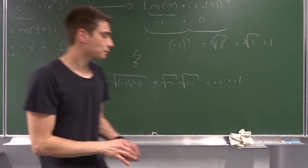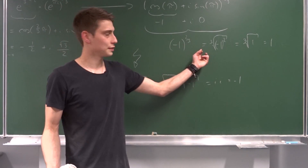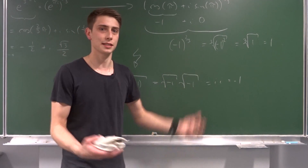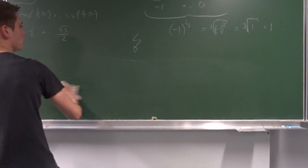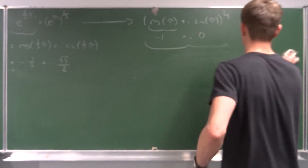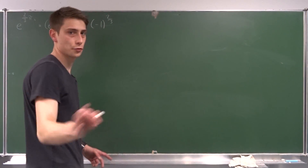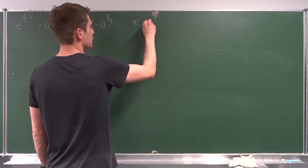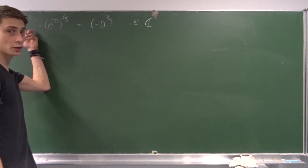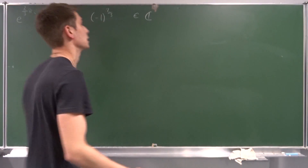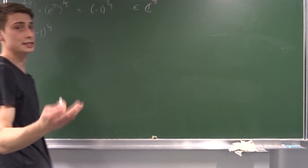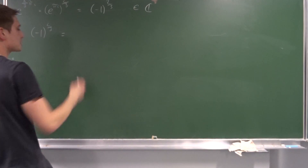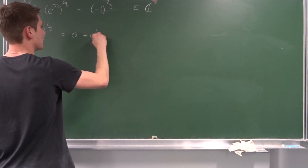The problem is you're treating minus one as if it's a real-valued function. What you should do instead is keep in mind that this quantity is an element of the complex numbers. You started with a complex number, so you have to end up with a complex number. A complex number — and minus one to the two-thirds power is indeed a complex number — has the structure a plus i times b.